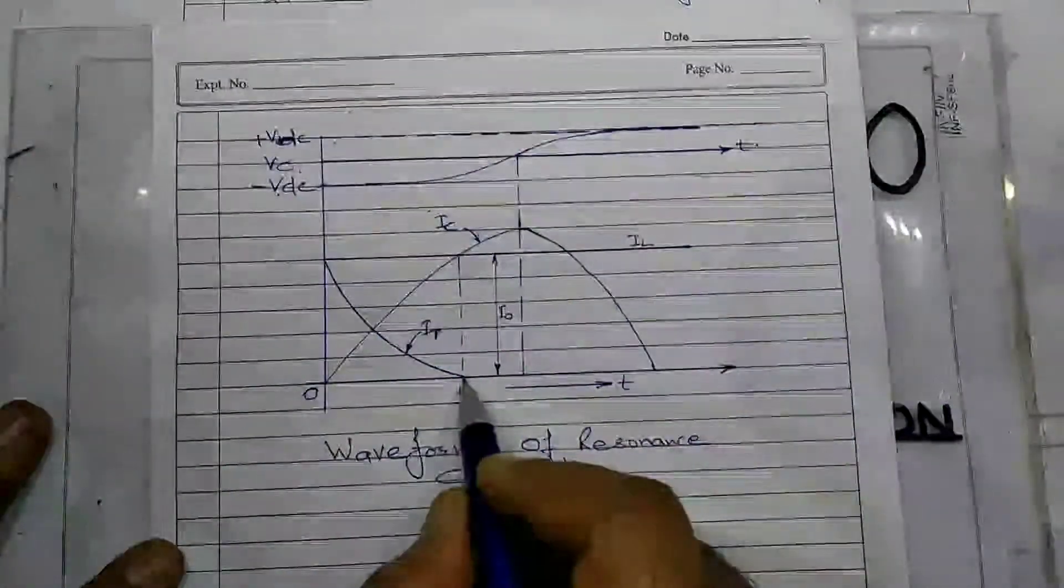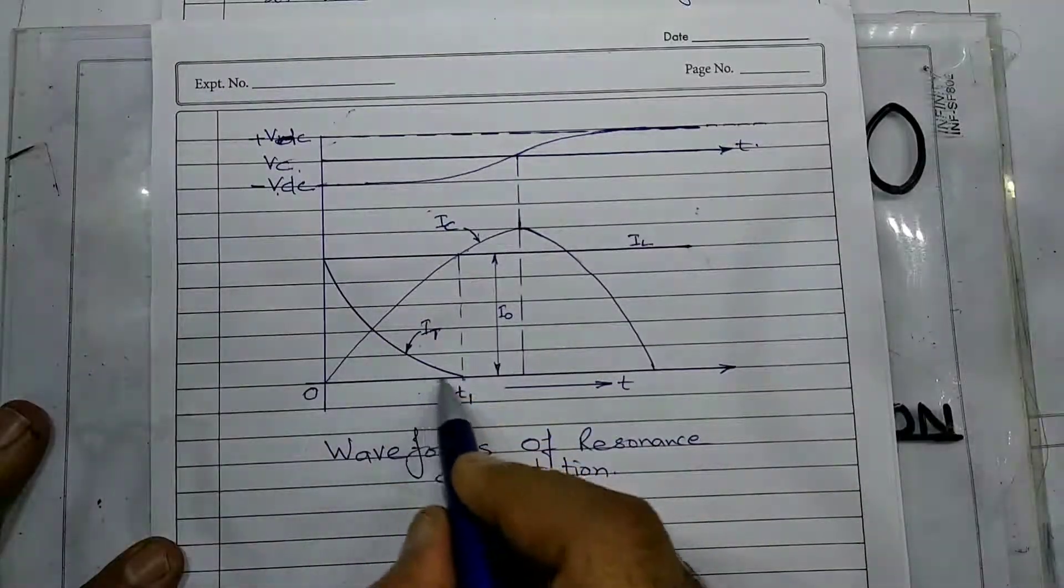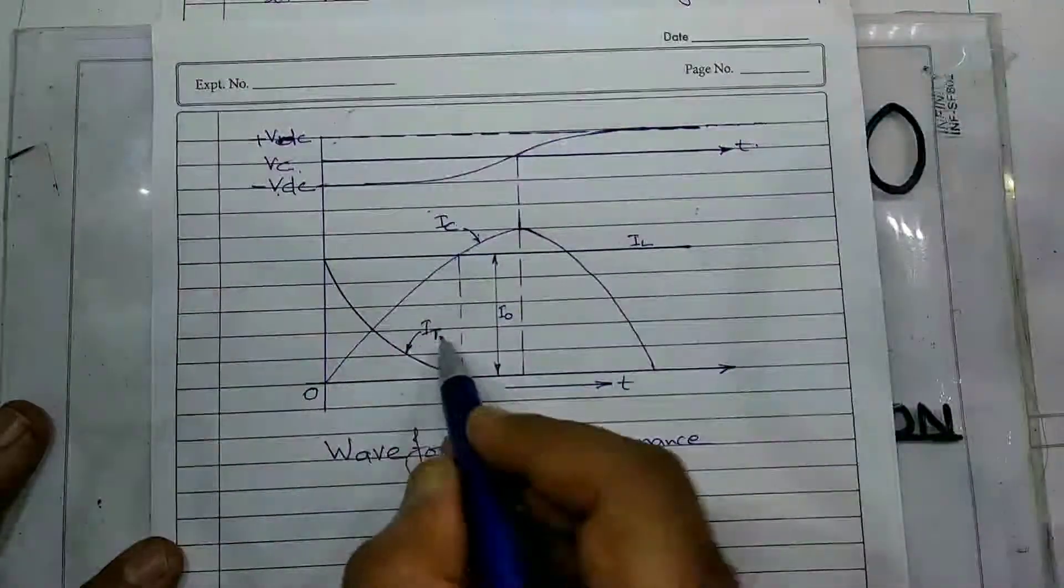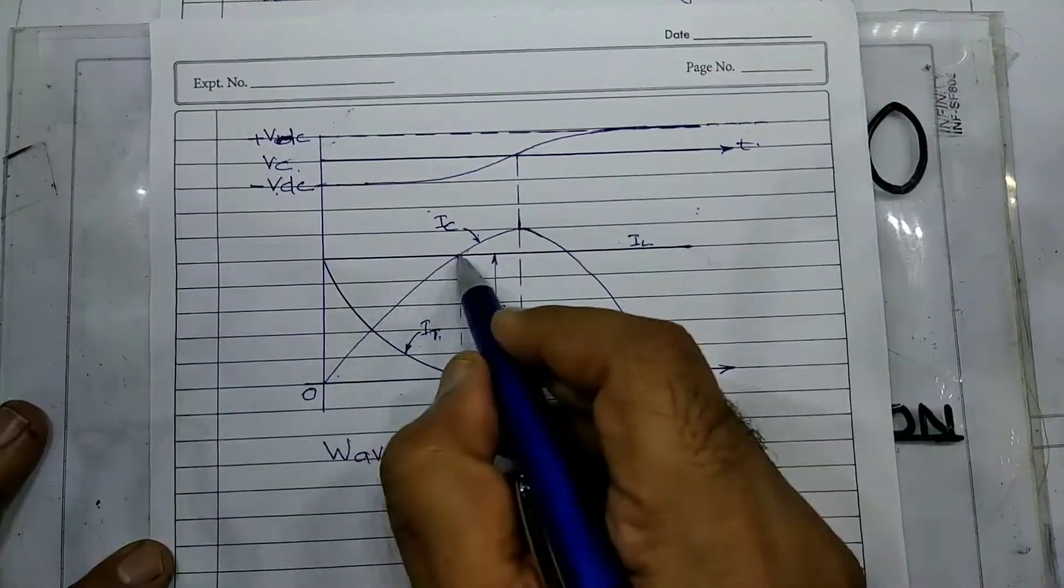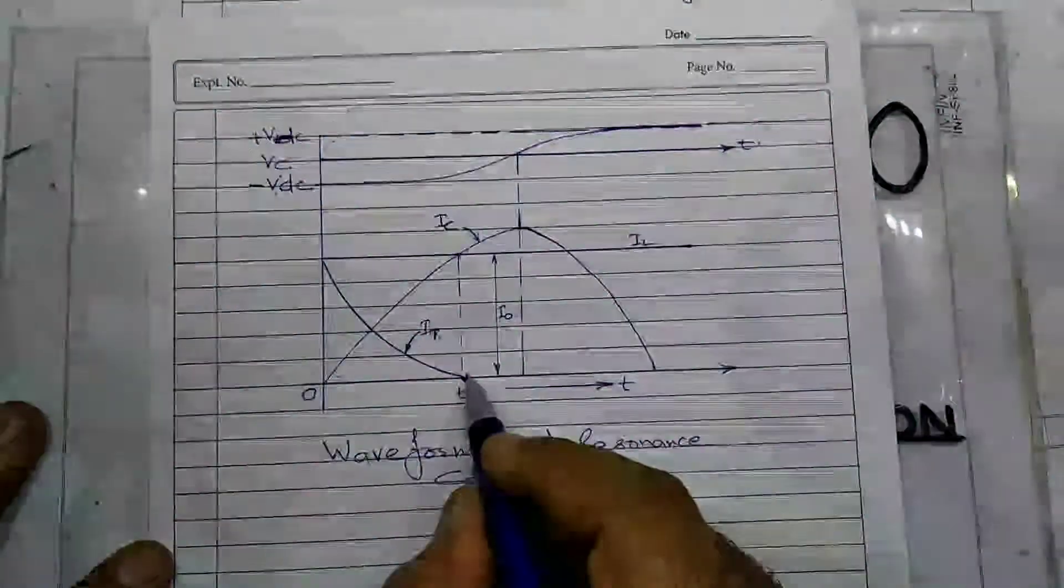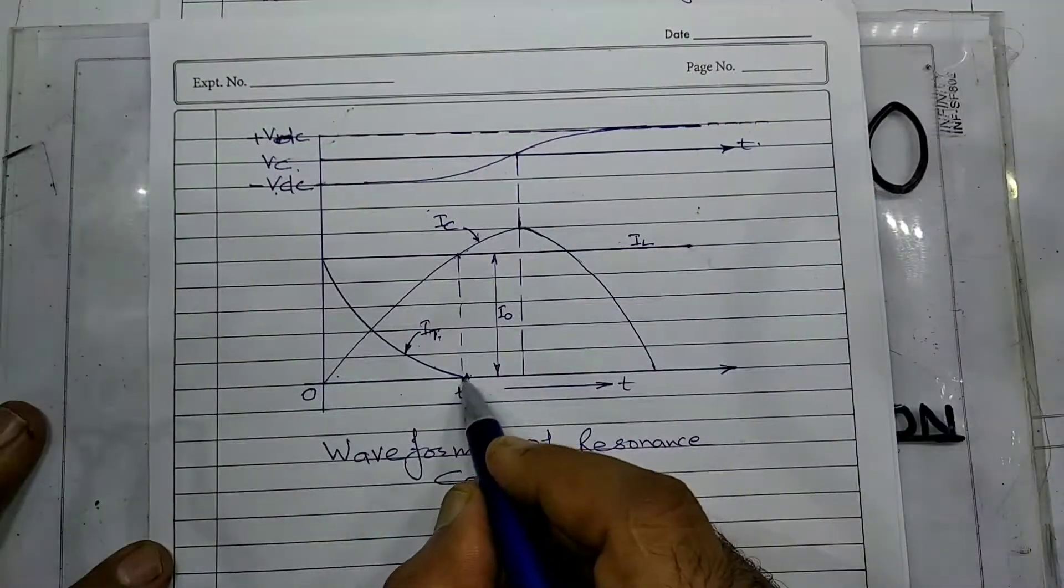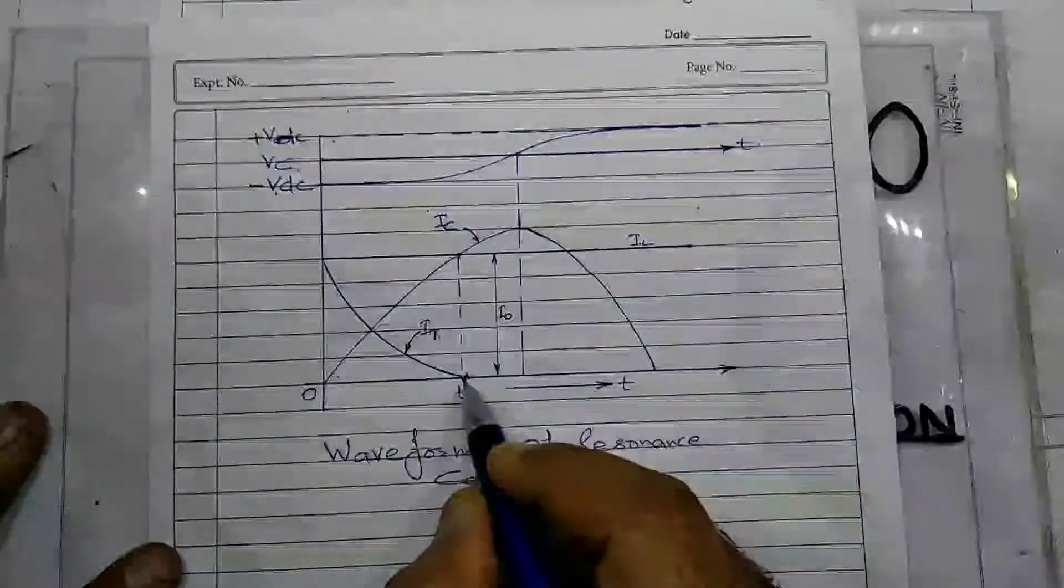At time T equal to T1, when the current through the thyristor IT equals the capacitor current IC, the thyristor is turned off forcefully due to current commutation.